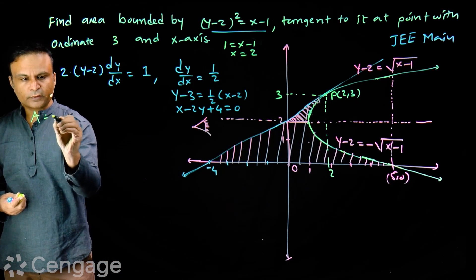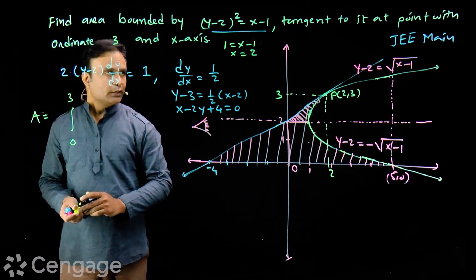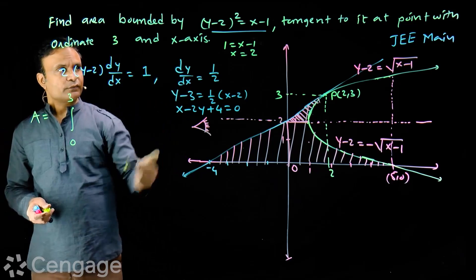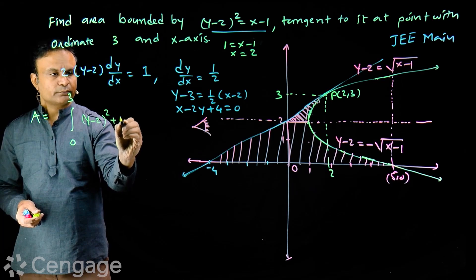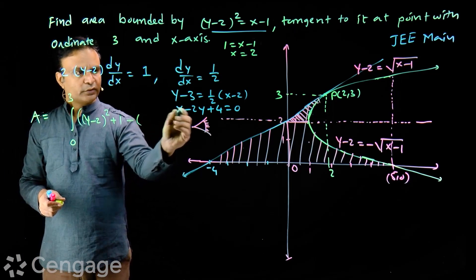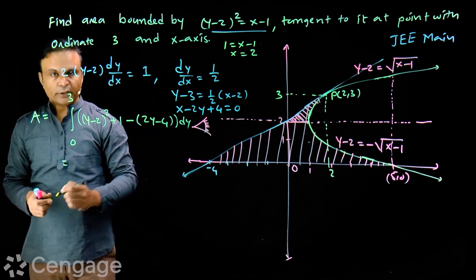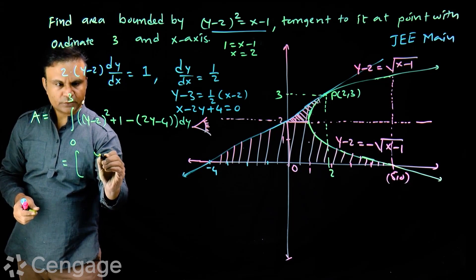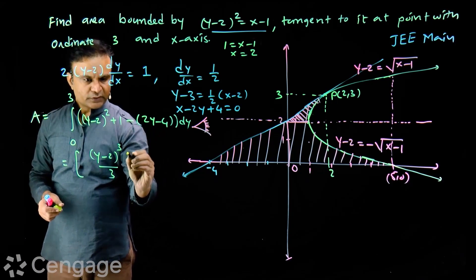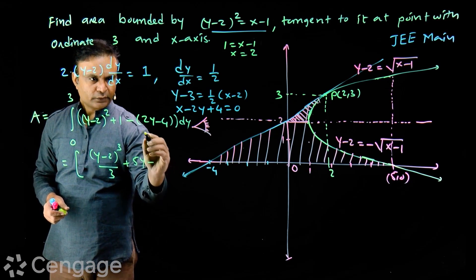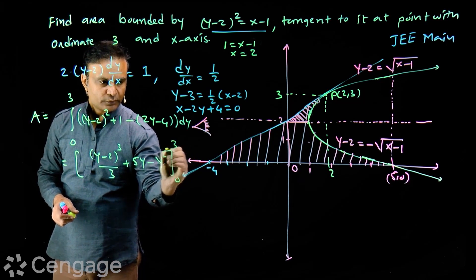Area A equals the integral from 0 to 3. Upper curve is x in terms of y: x = (y-2)² + 1. This is the upper curve minus lower curve: x = 2y - 4. The integration is (y-2)³/3 + 5y - y², with limits from 0 to 3.